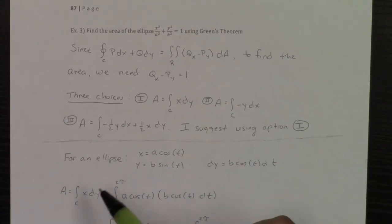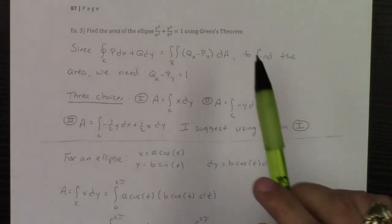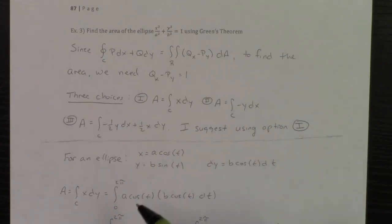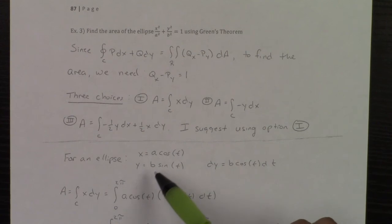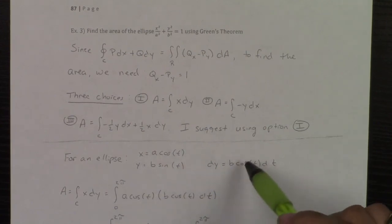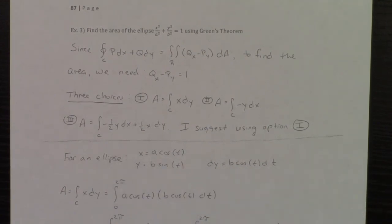And so if area is the line integral of x dy, that'll be the integral, it's going to be the entire region, so that's why I'm going to go the full 0 to 2 pi. My x was a cos t, my dy was b cos t.